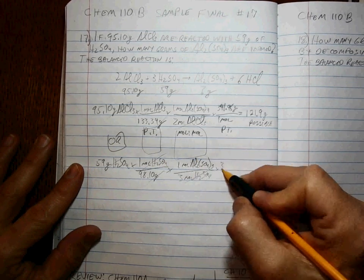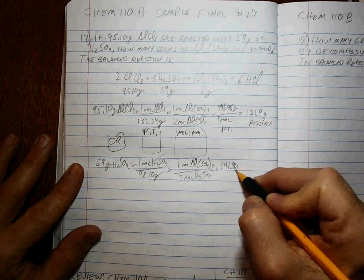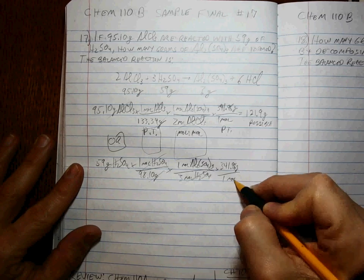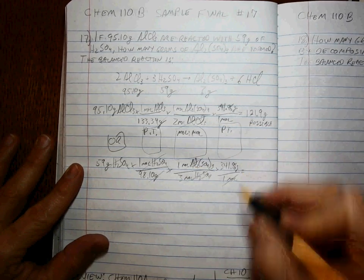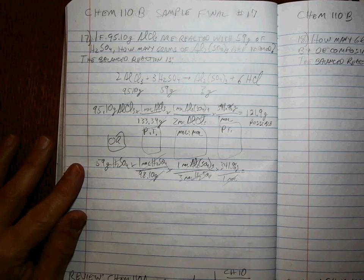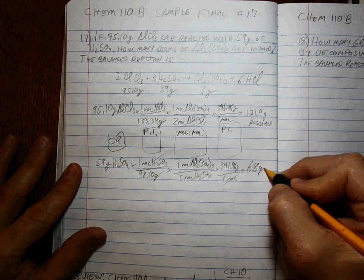Once we're at moles, we use the same molar mass, because it's the same stuff. The periodic table step. Oh my gosh, how many times are we going to do that in our lifetime in this class? We end up with 68 grams possible.